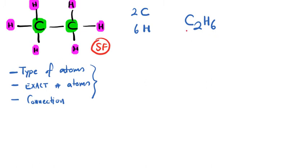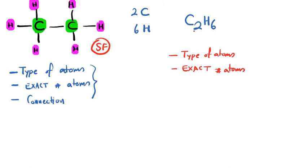Now, if I write this information simply as C₂H₆, I find the type of atoms and the exact number of atoms, but I don't have any information about the connection between them. Connection or molecular shape is only used for specific studies. So C₂H₆ written this way we call a molecular formula, which you will mostly use in your chemistry classes.